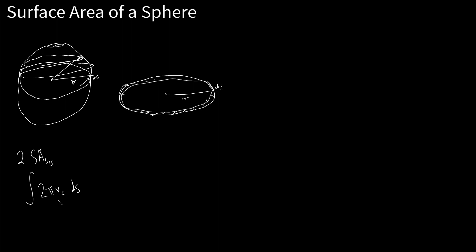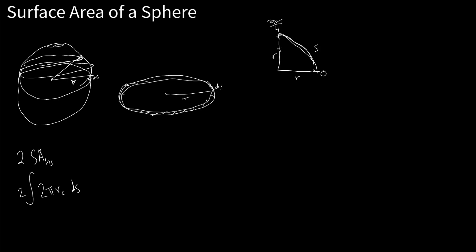Now our next job is to express r sub c and ds in terms of the same variable. We have two options. Looking at the cross section, we have r, a semicircle, and the arc length s. We could integrate with respect to s, from arc length 0 to 2 pi r over 4 — because the semicircle is one-fourth of the full circle. But expressing r in terms of s would get complicated.